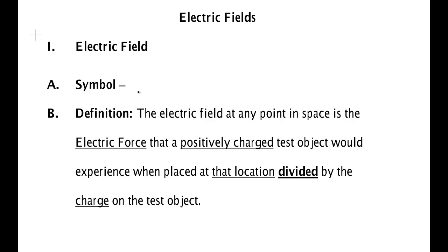The electric field symbol is E and it is a vector, so it has a vector sign over it. By definition, the electric field at any point in space is the electric force that a positive test charge object would experience when placed at that location, divided by the charge on the test object.